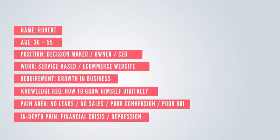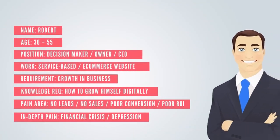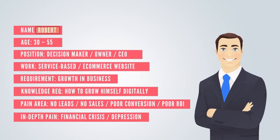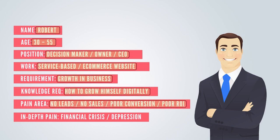For instance, here is my buyer persona presented on the screen. My buyer persona name is Robert, and his age is in the range of 33 to 55 years. His position is decision-maker — he is an owner or CEO of some organization — and he works in a service-based industry or owns an e-commerce business. His requirements include growth in business and knowledge, like learning how he can grow digitally. His pain areas are: not getting any leads, no sales, poor conversions, poor ROI, and in-depth pain such as financial crisis or depression.